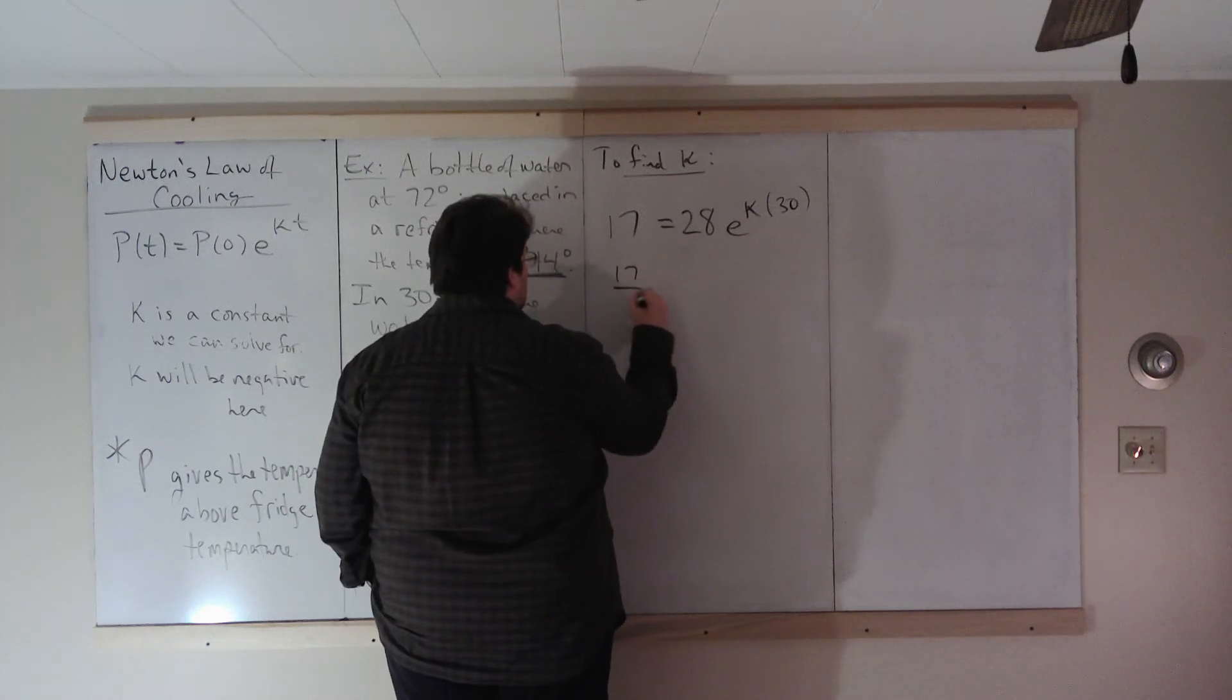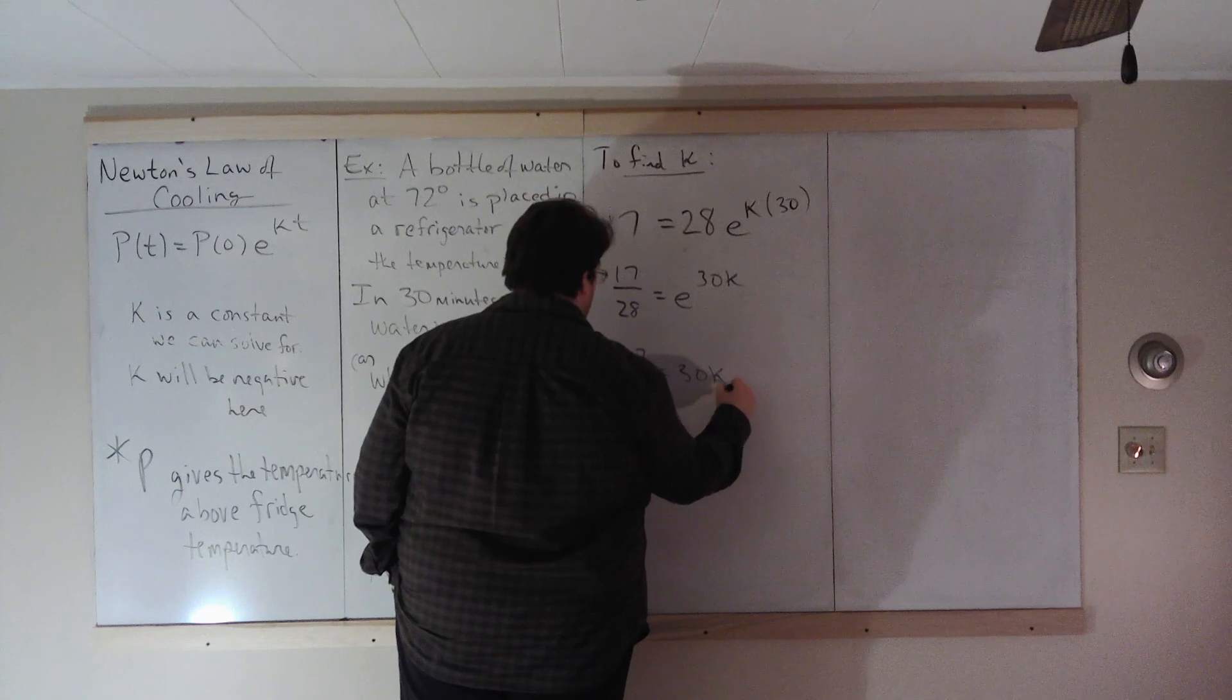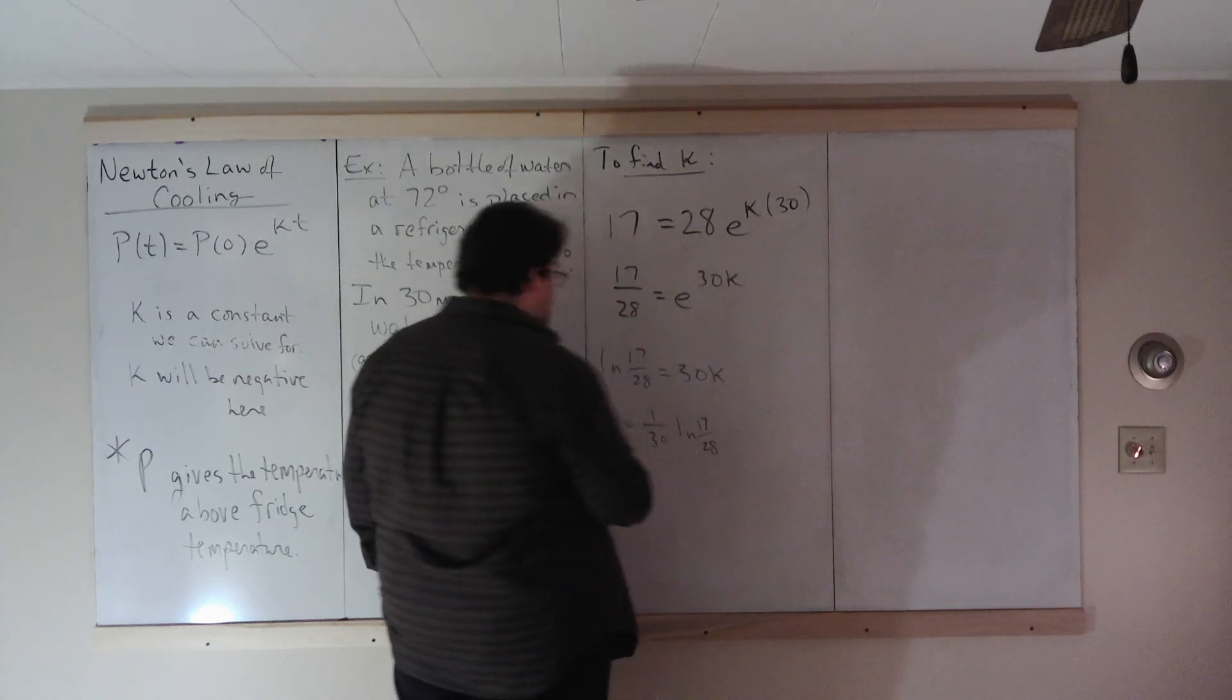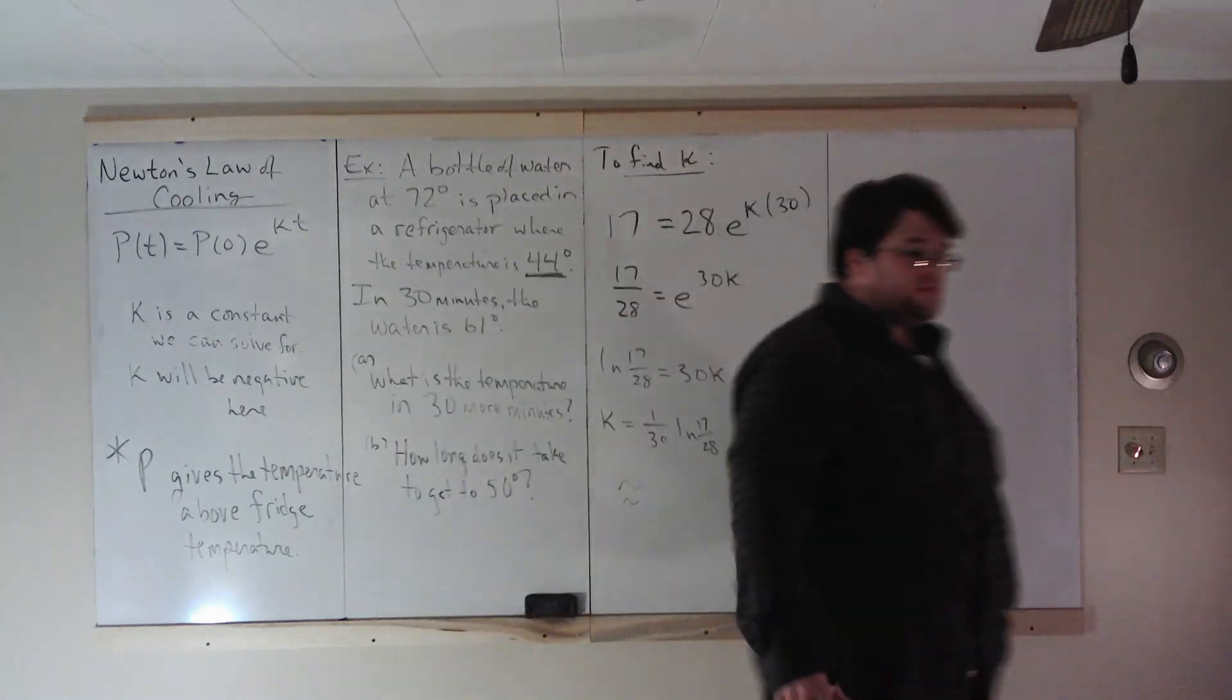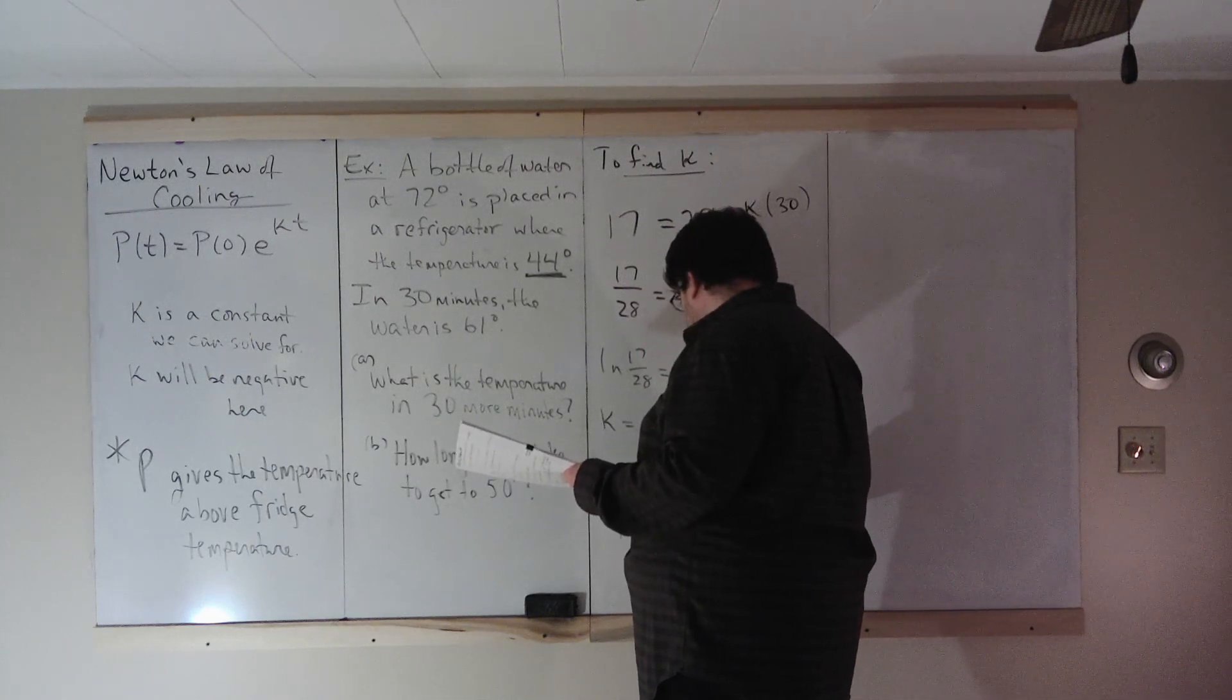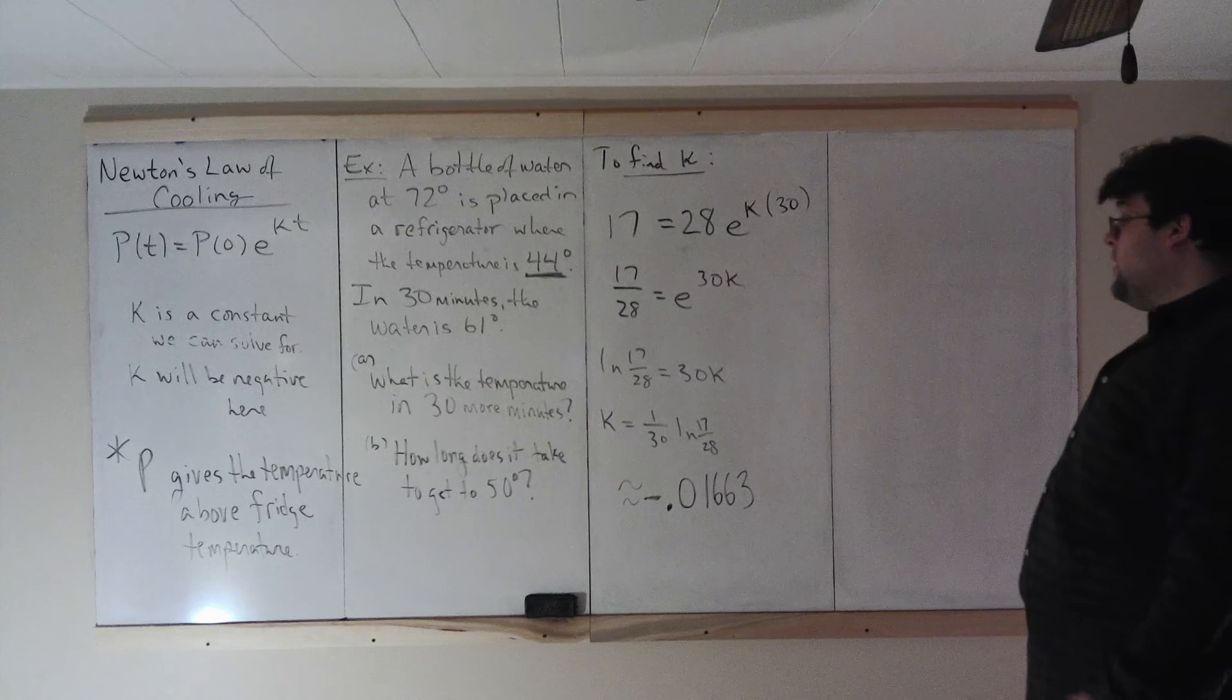Divide by 28. Log of both sides. Divide by 30. K is a thirtieth of the logarithm of 17 twenty-eighths. And as a decimal, now that fraction inside the logarithm is less than one so it will be negative. As a decimal, negative point zero one six six three.